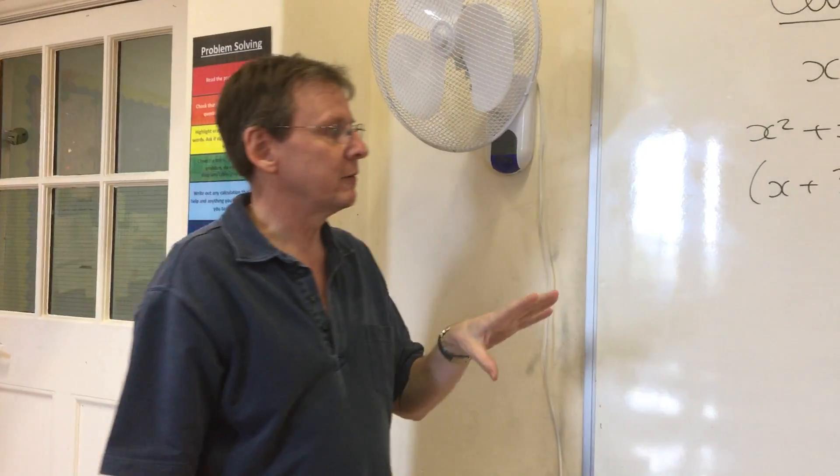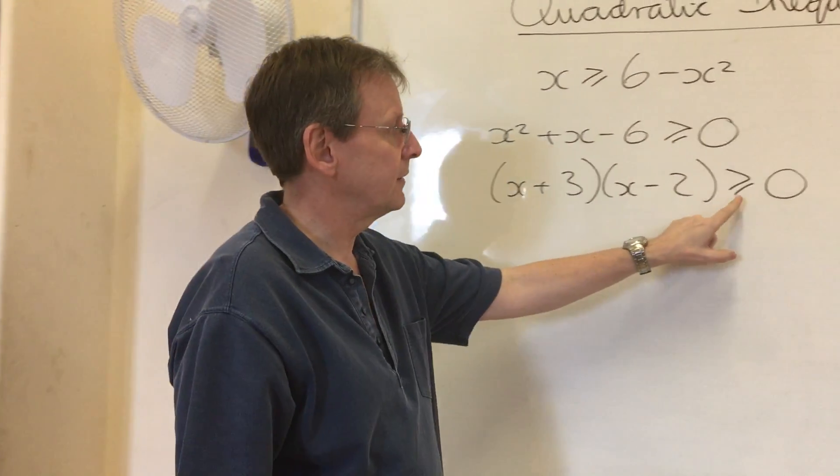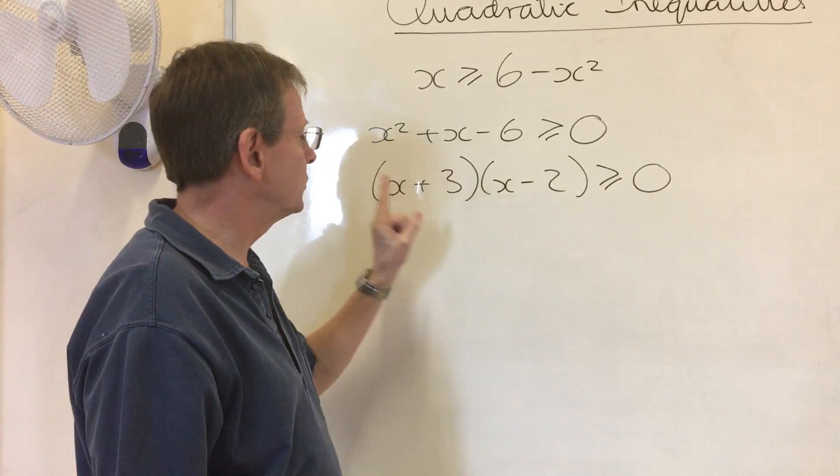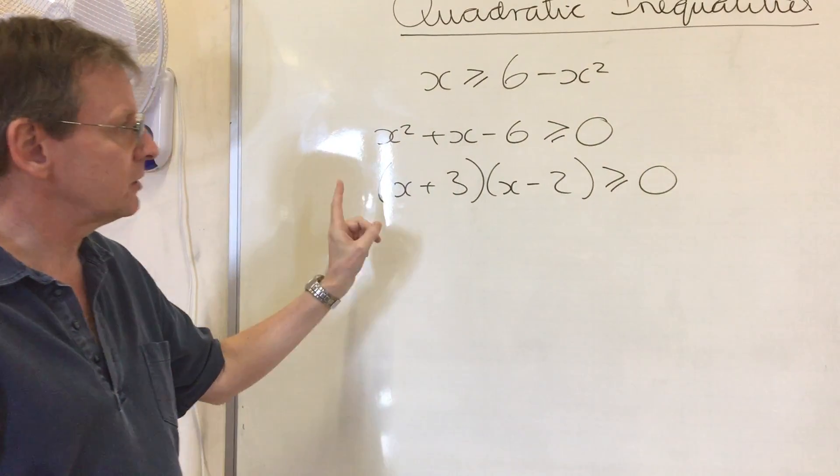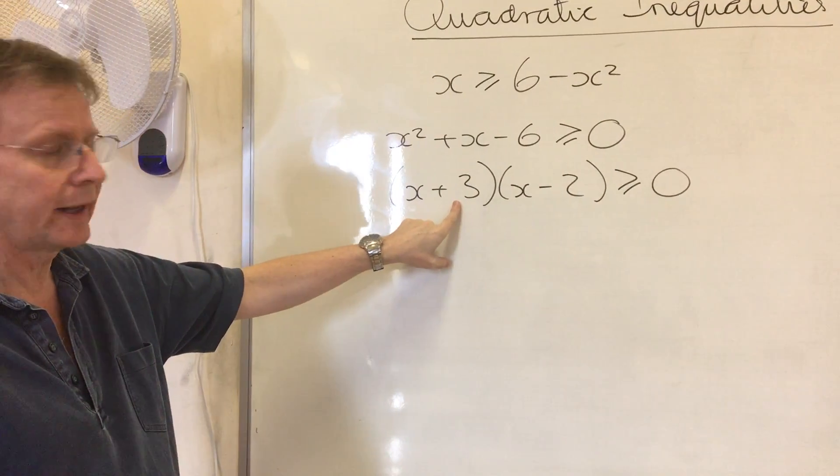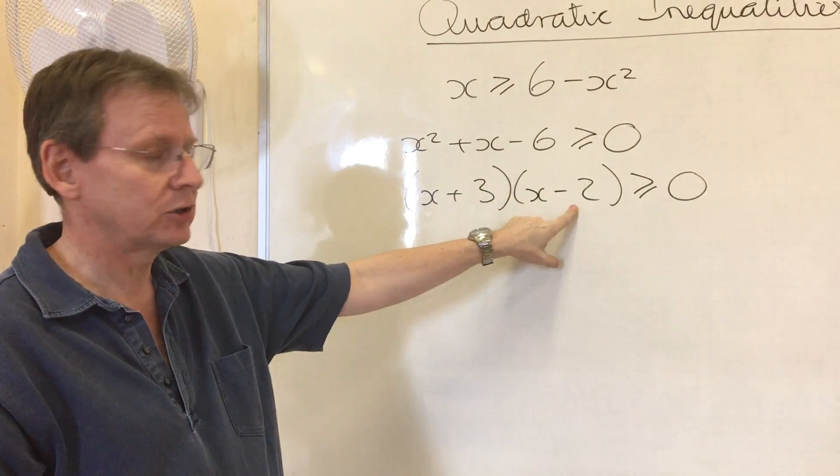Just temporarily, you have to pretend that that isn't equals, because you want to know what the two values of x are when that equals 0. And I hope you're all happy that that would lead to negative 3 and that would lead to 2.